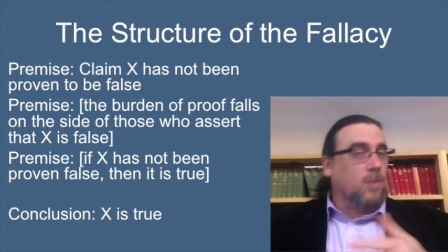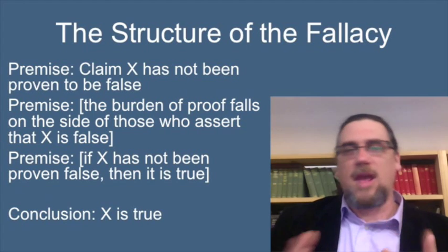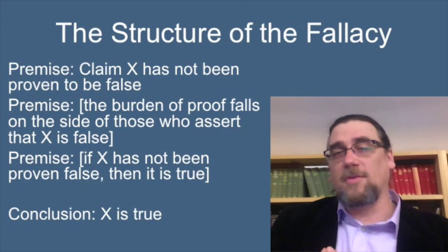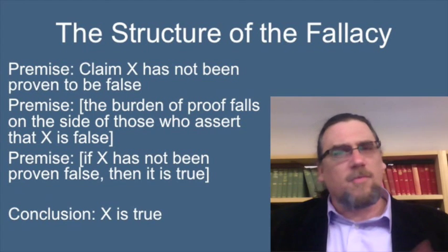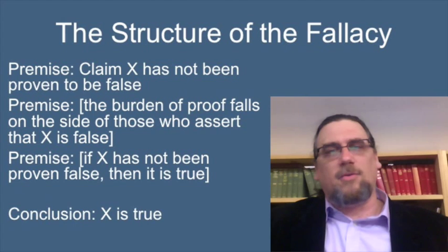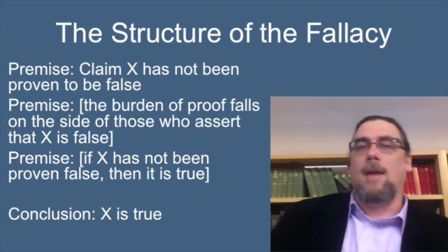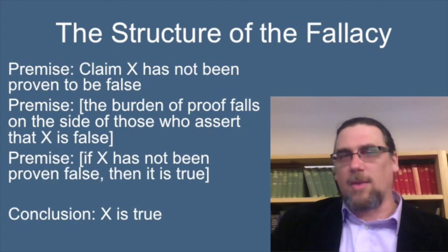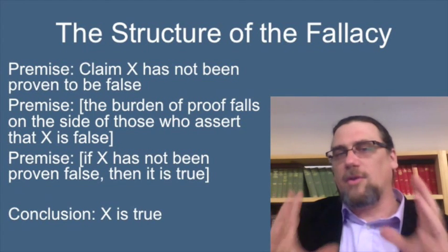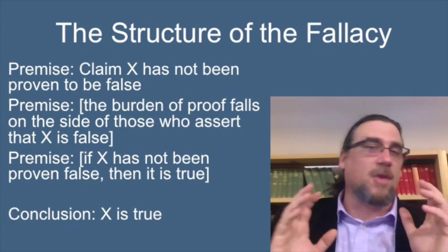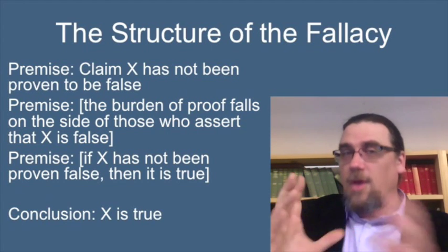The structure of this fallacy is that somebody says claim X has not been proven to be false, and concludes that X is therefore true. What are they assuming along the way? These are the implicit premises. One involves burden of proof — specifically, that burden of proof falls on the side of those who assert that X is false. They might also assume that if X has not been proven false, then it is true. It's those implicit premises that get you from 'something hasn't been proven false' to 'therefore it's true,' or from 'something hasn't been proven true' to 'therefore it's false.'